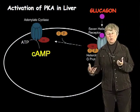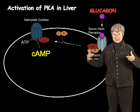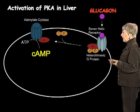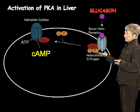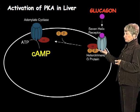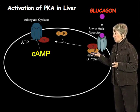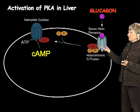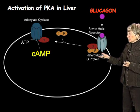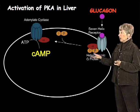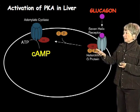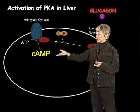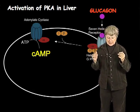Let's see how that works. Glucagon is a hormone — it doesn't ever get into the cell. It binds to a receptor on the surface of the liver cell. In this case, this is a GPCR, a G-protein coupled receptor, the largest gene family in our human genome. It binds, and that couples to a heterotrimeric G-protein, which becomes activated.